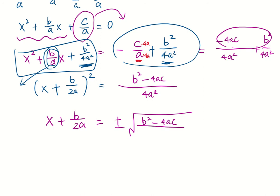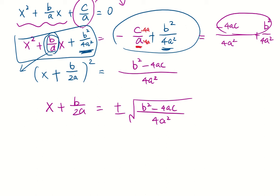Okay, so we can do square root of b squared minus 4ac over square root of 4a squared.